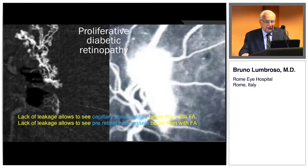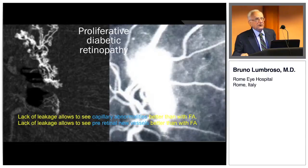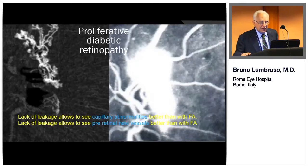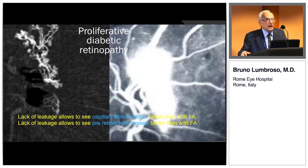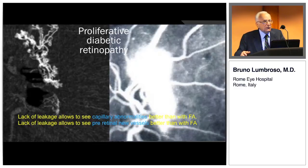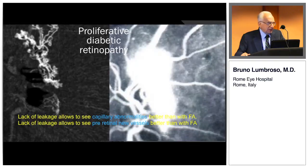Here is a fluorescein angiography of proliferative diabetic retinopathy. The leakage immediately after a few seconds masks the capillaries. On the left in AngioView, you see the capillaries exactly as they are — because there is no leakage, only moving blood cells inside the capillaries are visible.